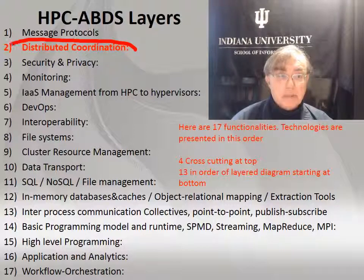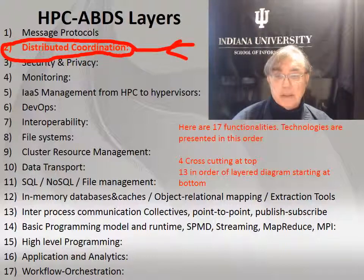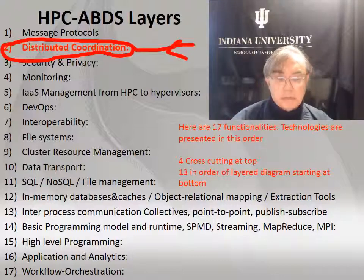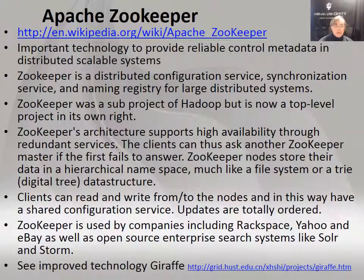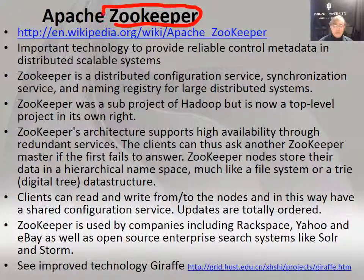That's the end of this level. Now we get on to the next level — distributed coordination, level two. This has some mix of technologies. The first is extremely important: Zookeeper. It's a sort of revolutionary technology. It came out of a Google paper originally, and Zookeeper was the Apache implementation of that. It was part of Hadoop because Google did MapReduce.